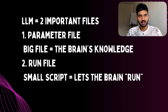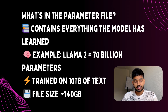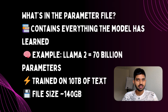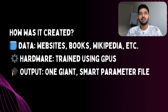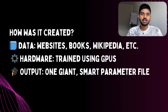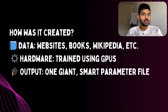The parameter file is a big file that contains all the knowledge the model has learned. For example, LLaMA 2 has a version with 70 billion parameters — those 70 billion little things help the model predict the next word or sentence. This parameter file was created by training the model on around 10 terabytes of text — a lot of text from websites, Wikipedia, books, and many other sources. This data is trained using powerful GPUs, which is why NVIDIA's stock went up like crazy.